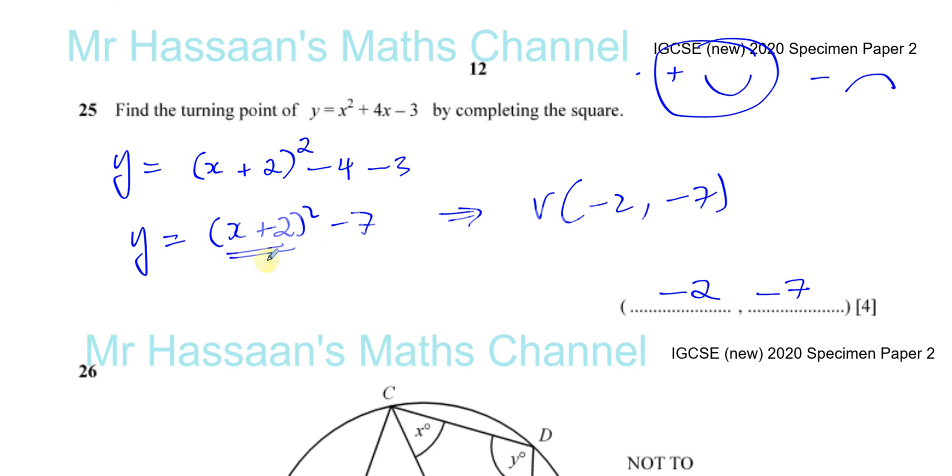Because the lowest it can ever be is 0. It can never be lower than 0. You will never get minus 1 minus 7, for example, because whatever happens here, even if this is negative inside the bracket, it's going to be squared and become positive. So I hope that's clear. That's using completing the square to find the vertex.